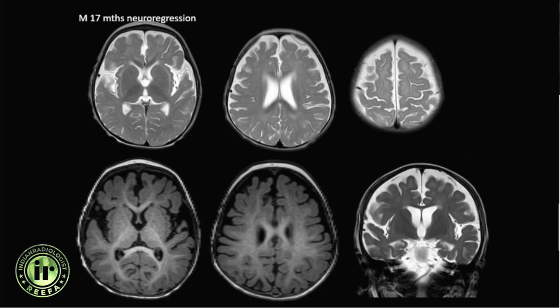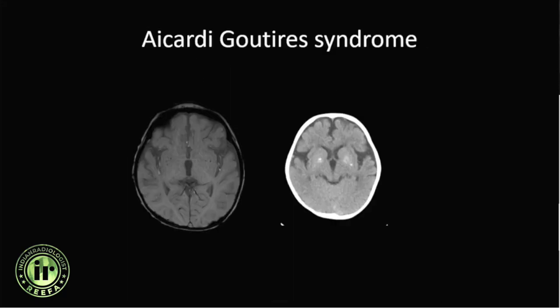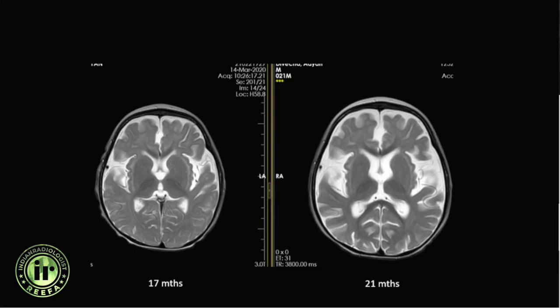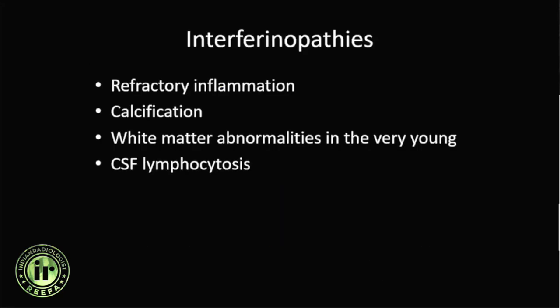A 17-month-old with neuroregression showed diffuse white matter volume loss and signal abnormality in the white matter, but no other specific MRI findings. On SWI and CT, there were tiny specks of calcification in the basal ganglia, confirming the diagnosis of Aicardi-Goutières syndrome. On serial MRI, progressive reduction in white matter volume was seen. Aicardi-Goutières syndrome falls under the classification of infantile interferonopathies, characterized by sterile inflammation, calcification, white matter abnormalities in the very young, and CSF lymphocytosis.